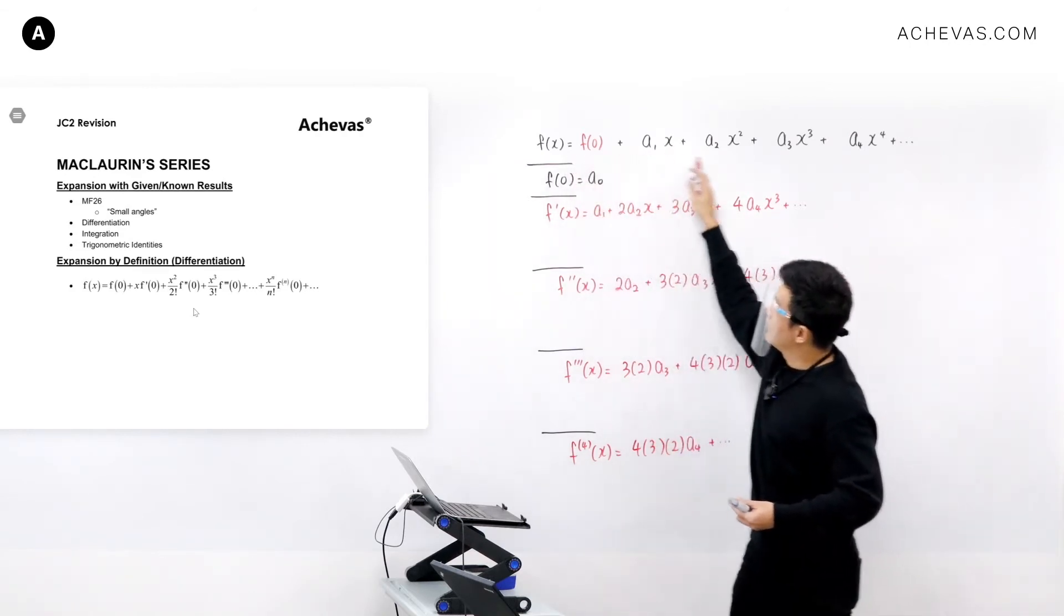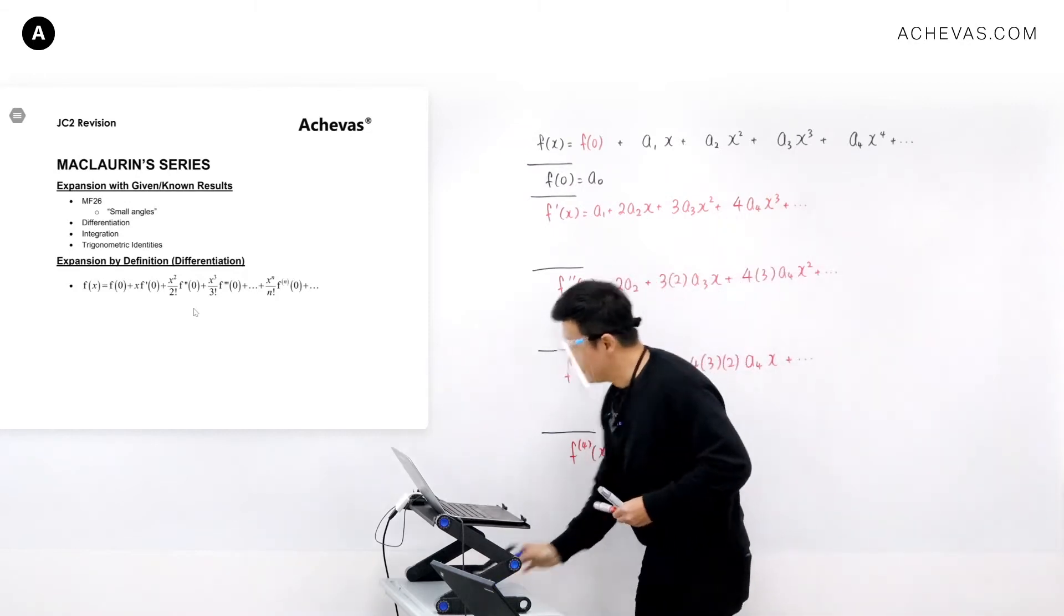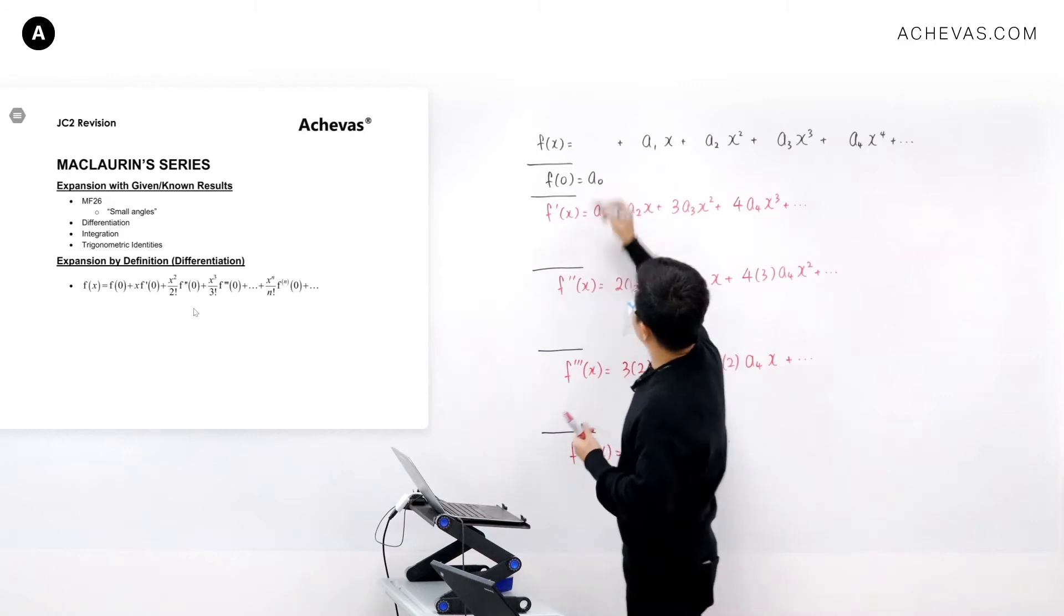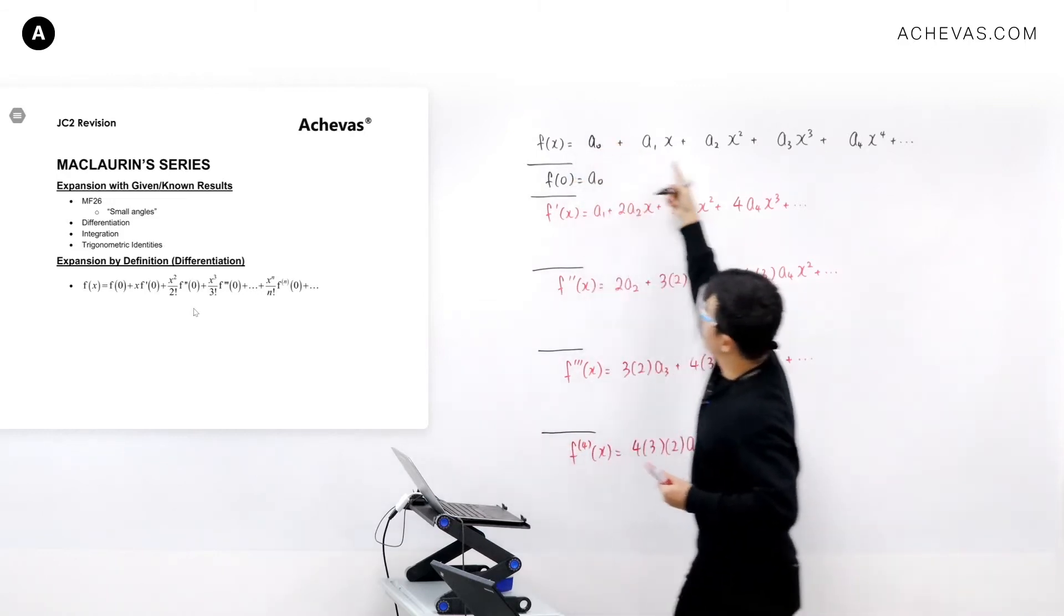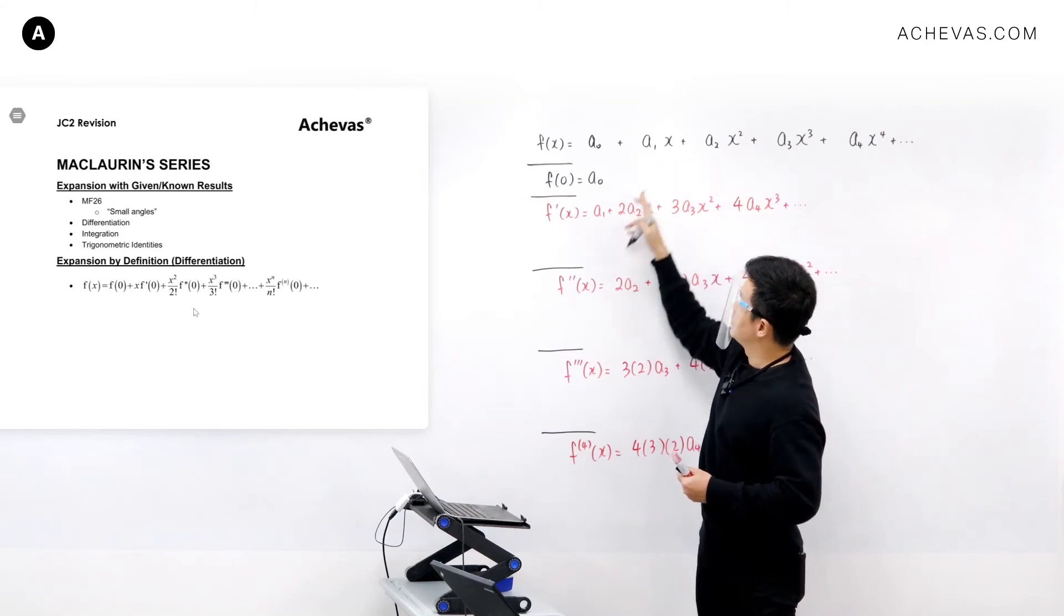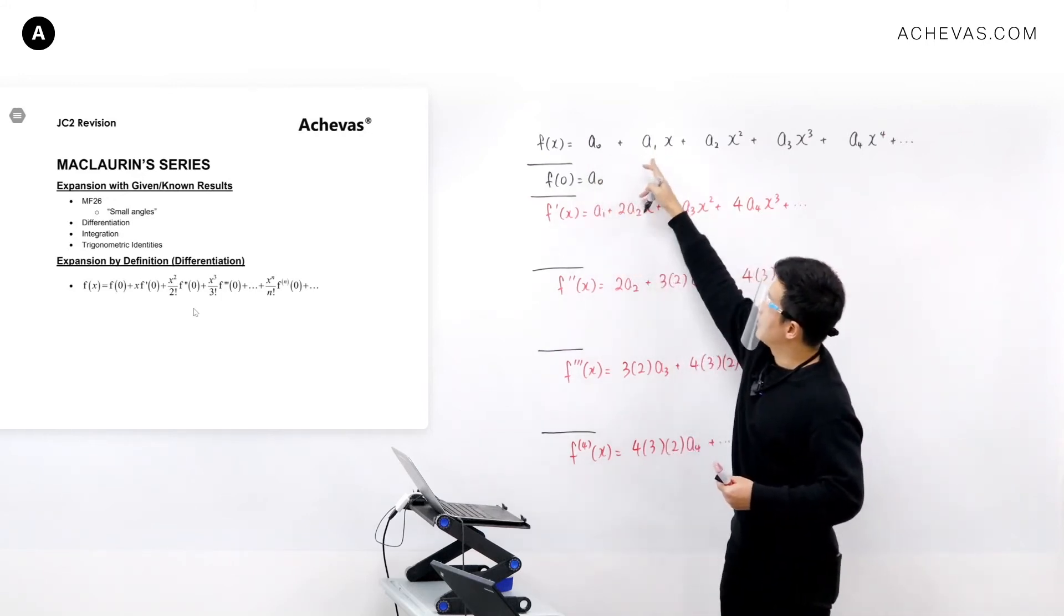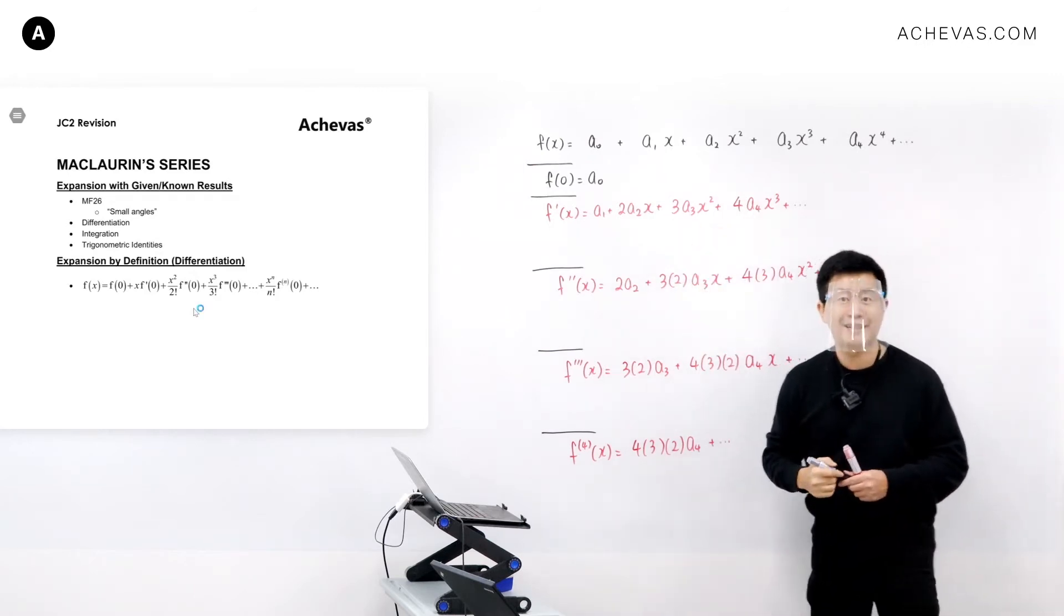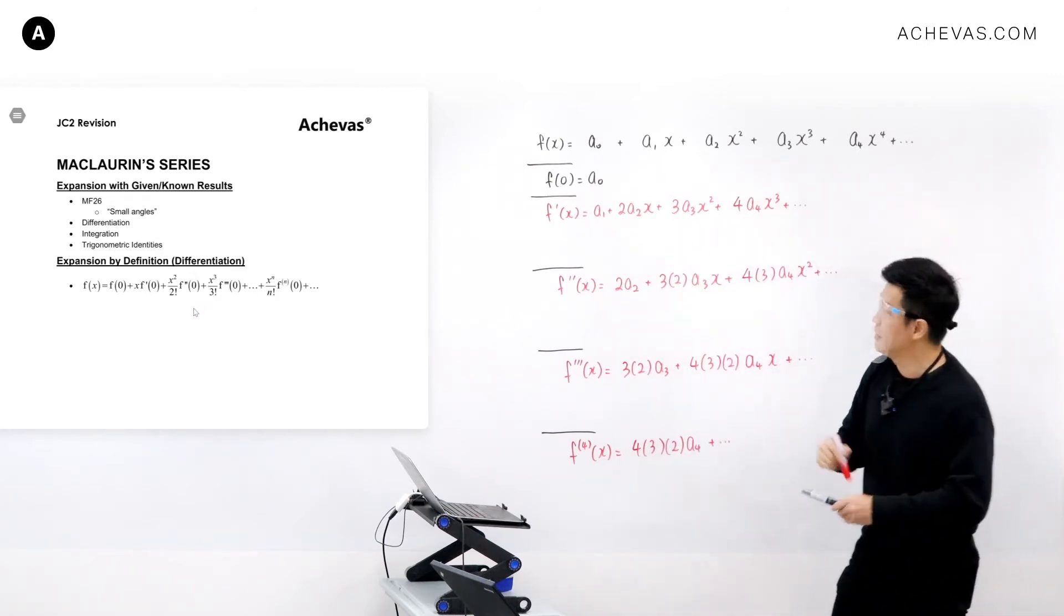How about finding a1? To find a1, I'm going to take this original equation. I'm going to differentiate it once. Because when I differentiate it once, this x will disappear. This will totally disappear, and I'm going to be left with a1. For the rest of the terms, it will still have x.